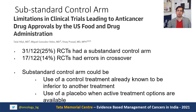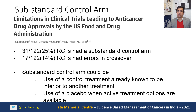The other issue is that of substandard control arms. A paper published last year showed that substandard control arm use and crossover errors are quite common among trials that have led to FDA approval — 25% had a substandard control arm and 14% had errors in crossover. A substandard control arm can take two forms: using a control treatment already known to be inferior to another treatment, or using a placebo when active treatment options are available.